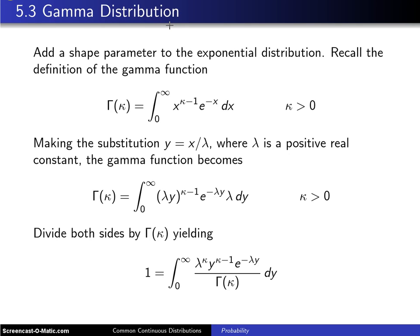Here is one way to develop the gamma distribution. One way to think about it is adding a shape parameter to the exponential distribution. Recall that the definition of the gamma function looks like this. Gamma of κ is the integral from 0 to infinity of x to the κ minus 1 e to the minus x dx for some κ value, which is greater than 0.